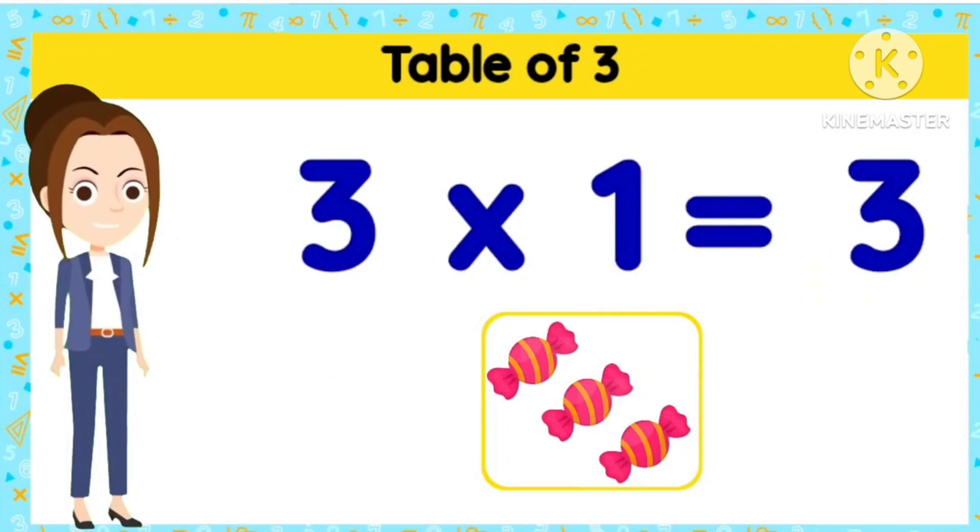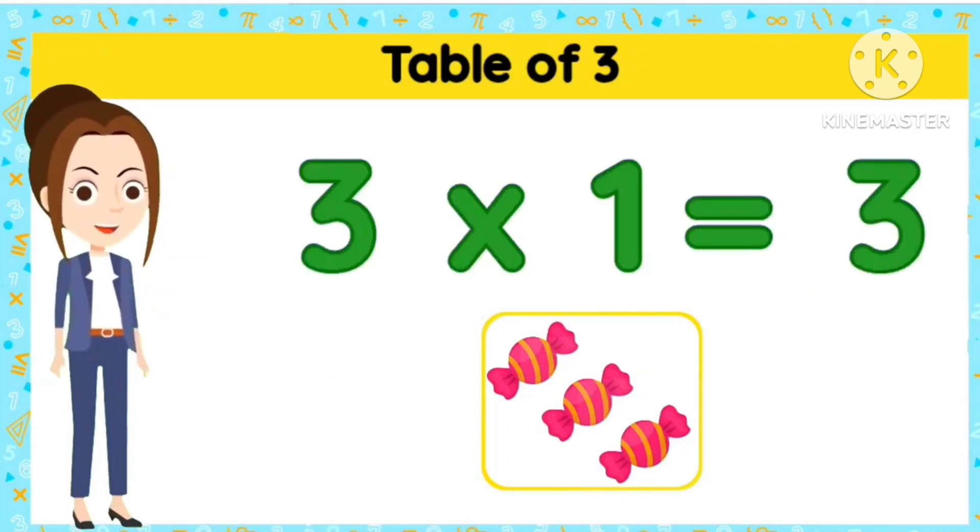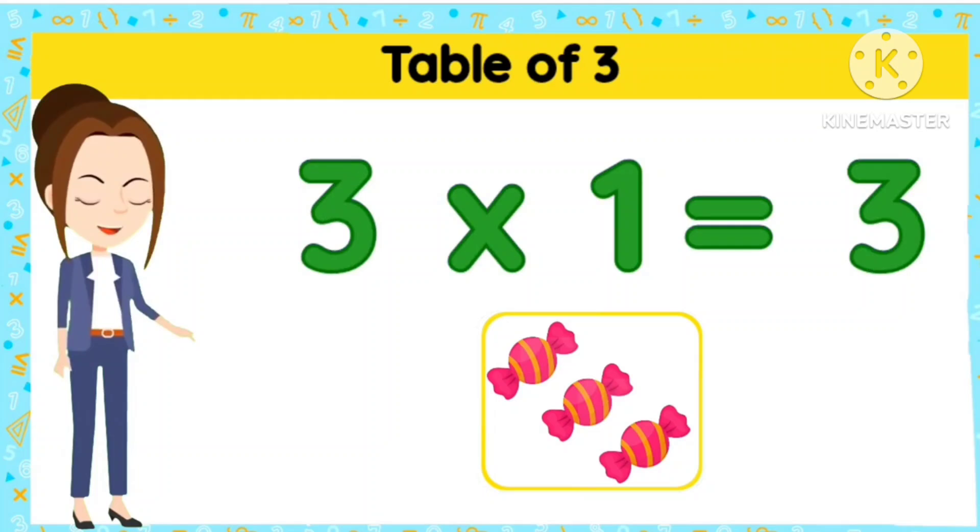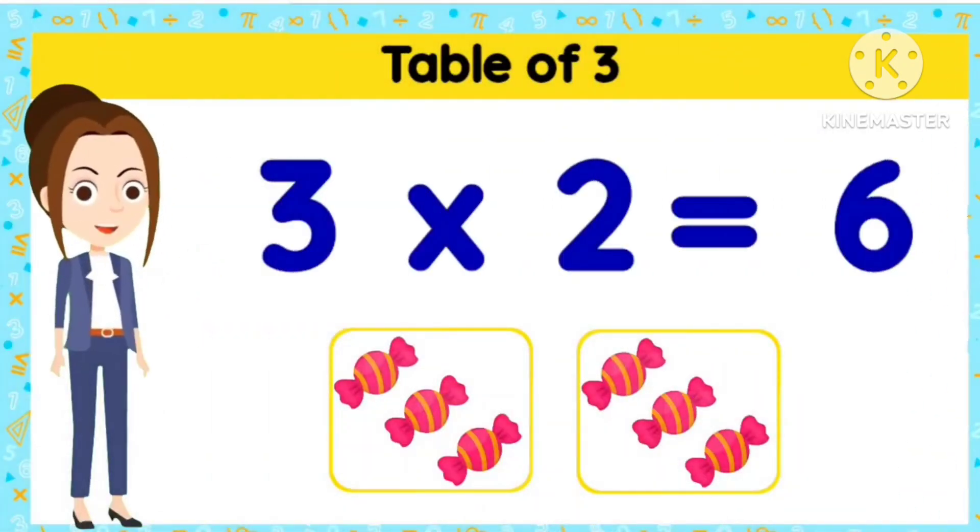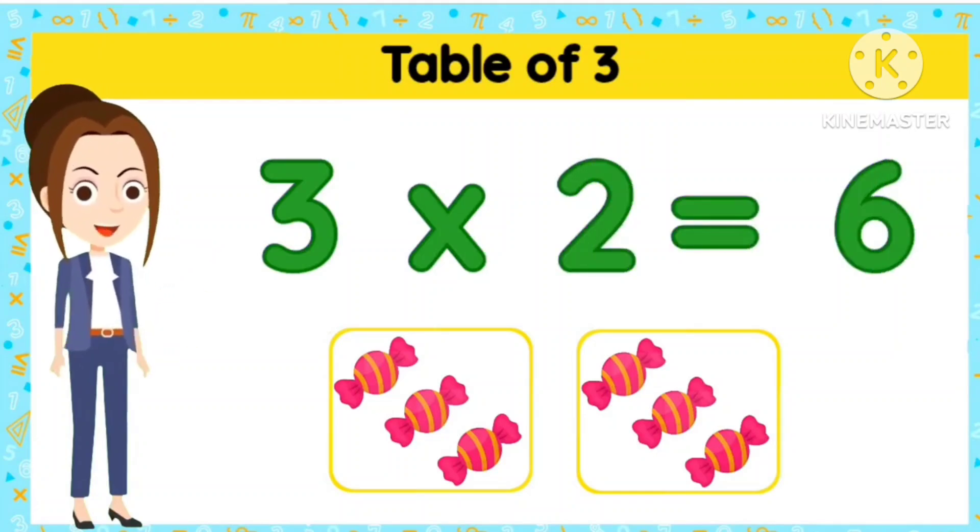3 1s are 3. 3 1s are 3. 3 2s are 6. 3 2s are 6.